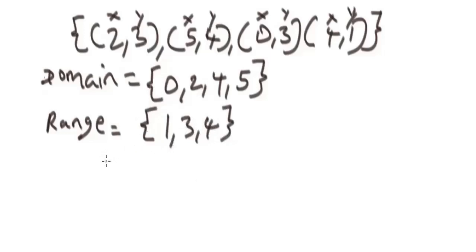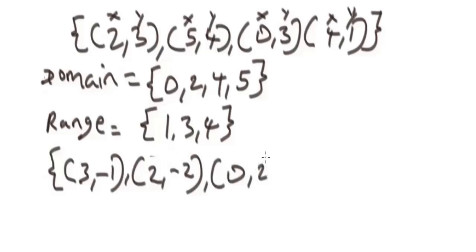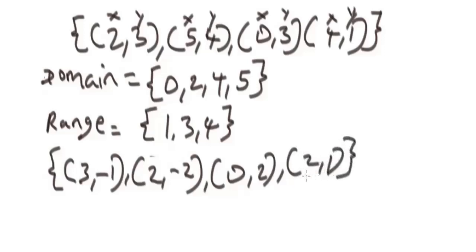Let me give you another set of ordered pairs to solve. You have (3, -1), (2, -2), (0, 2), and (2, 1). I'll give you a chance to pause this video and see if you can figure out the domain and range.